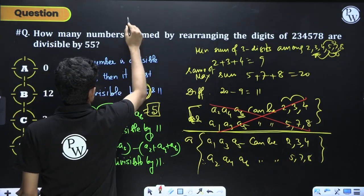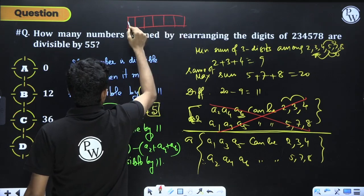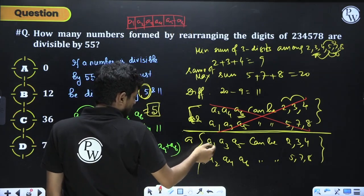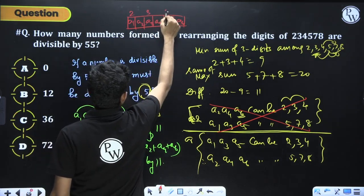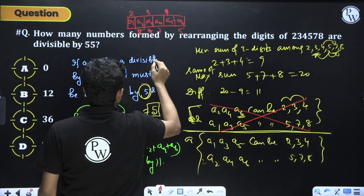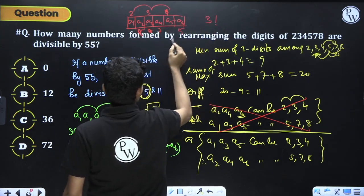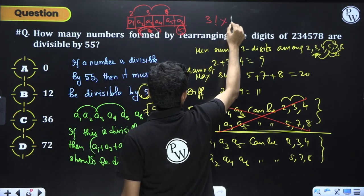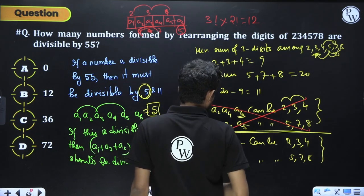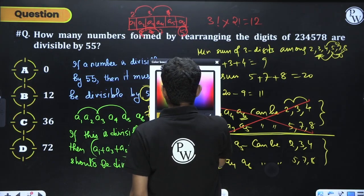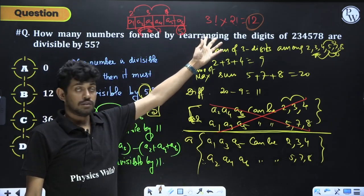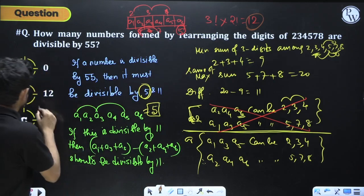The total count is 3! × 2! = 6 × 2 = 12. Hence the number of such numbers divisible by 55 is 12 — option B is correct. People might get confused about why only one combination works, but any other arrangement gives a difference not divisible by 11.